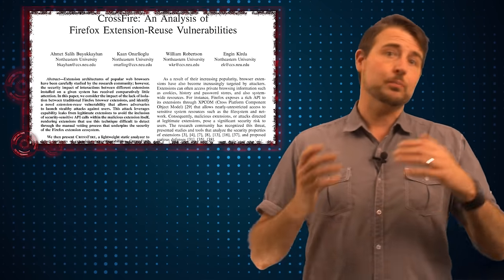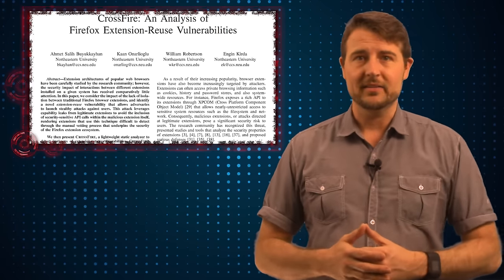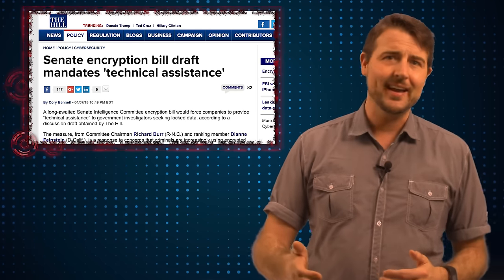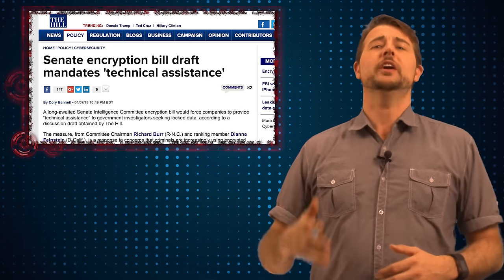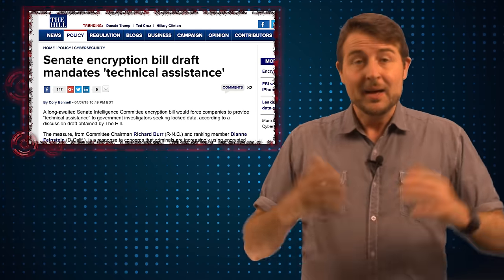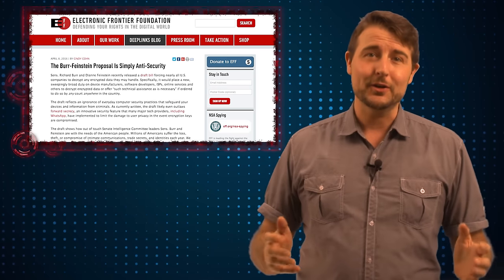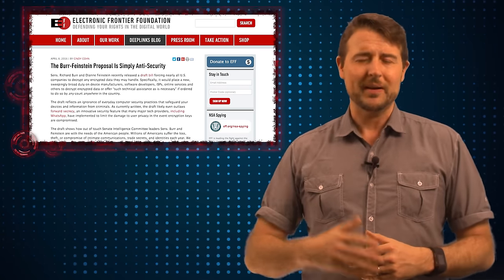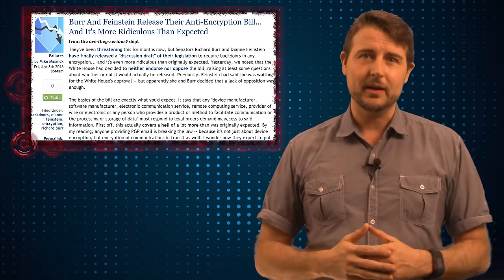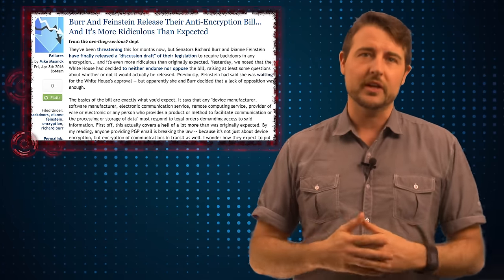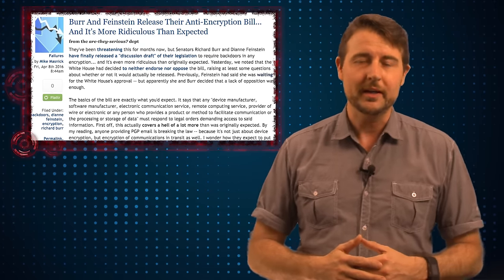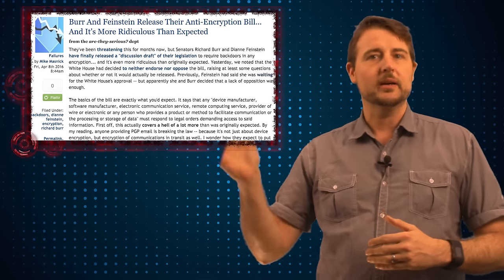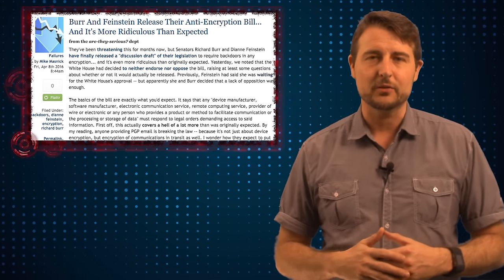Now the biggest story today is probably not this — it's probably the U.S. Congress proposing a new anti-encryption or encryption backdoor bill. But today's Friday, we're all in a good mood, so I just don't feel like covering this topic. It's such a stupid bill that not only hurts security but would hurt the U.S. economy. We'll probably talk about this at some point, probably in a blog post or a video post next week.